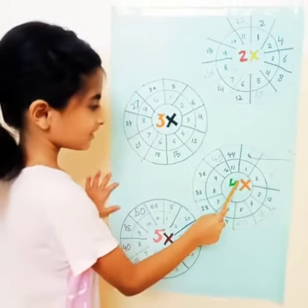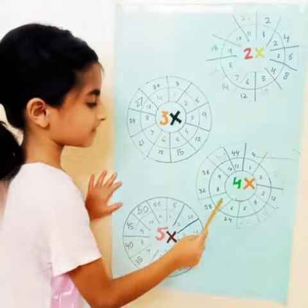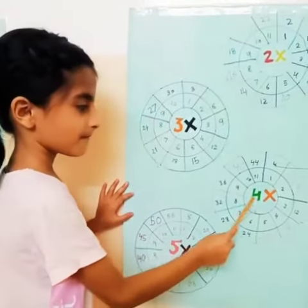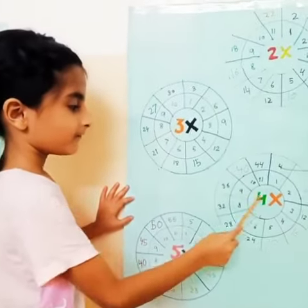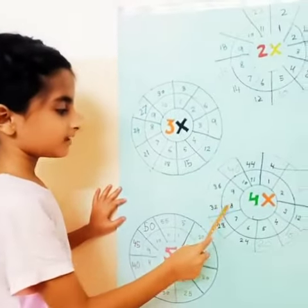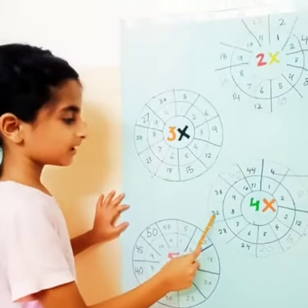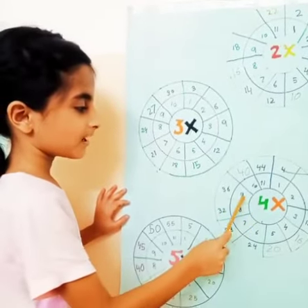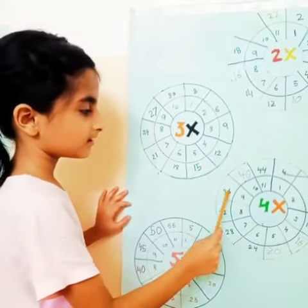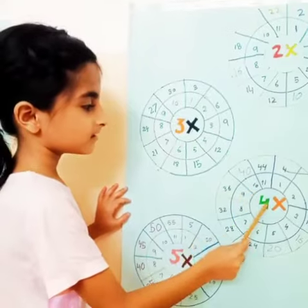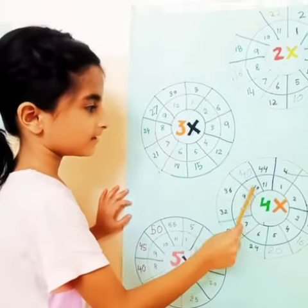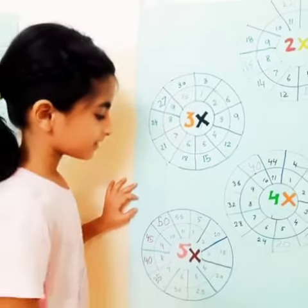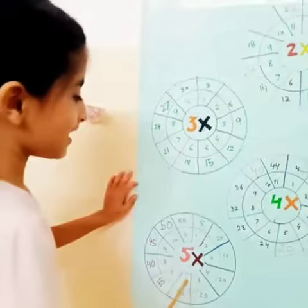4 7's are 28, 4 8's are 32, 4 9's are 36, 4 10's are 40. Table of 5.